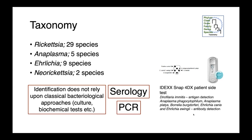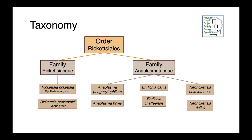In veterinary medicine, one really important tool is the IDEXX SNAP 4Dx test. This is a patient-side test where you put a drop of blood from your patient into this reservoir, and it flows across a membrane allowing detection of antibodies for a variety of vector-borne bacteria. If we look at how these bacteria are related at a high level: we have our order Rickettsiales, the Rickettsiaceae family containing Rickettsia rickettsii and Rickettsia prowazekii, and then the Anaplasmataceae, which includes Anaplasma, Ehrlichia, and Neorickettsia.